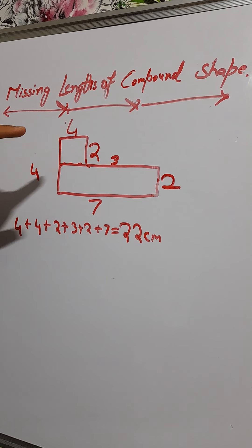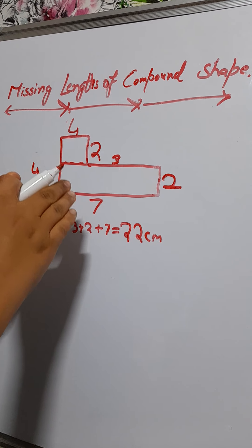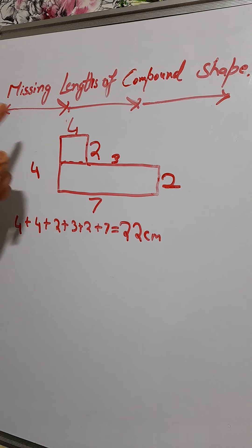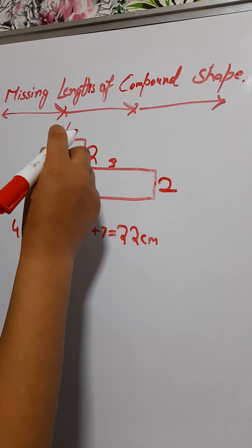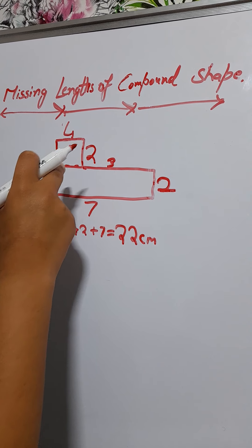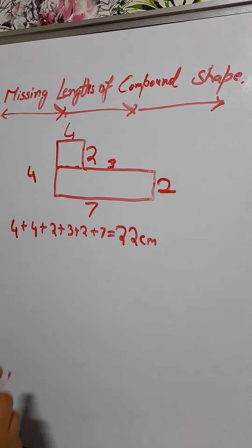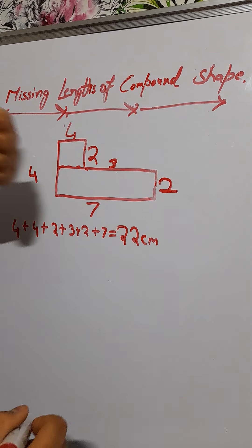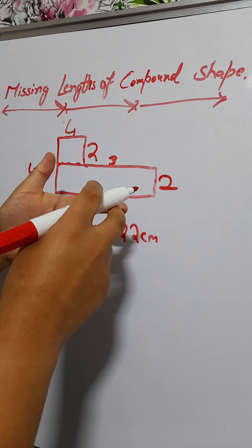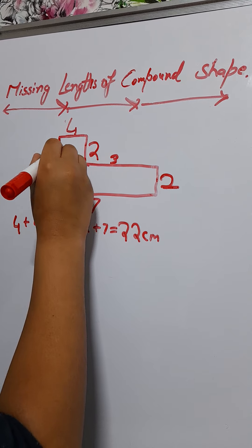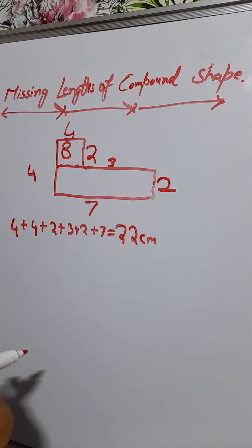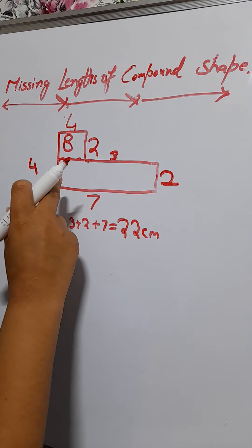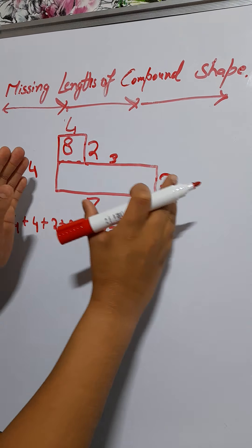We have to add the area of both pieces together, but first we find each area by multiplying length by width. For the first rectangle, four and two are the length and width. Four times two — counting four rows of two: two, four, six, eight — gives us eight.